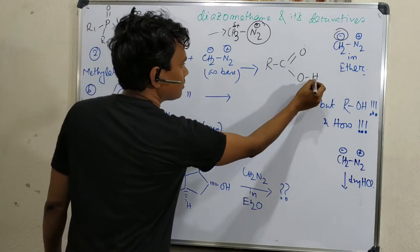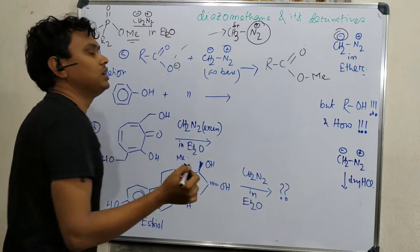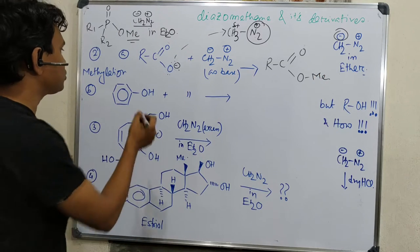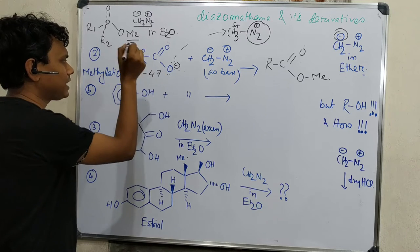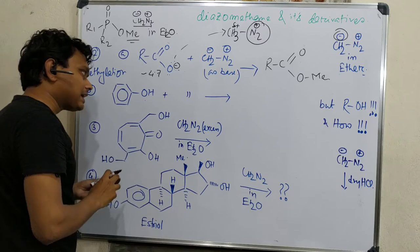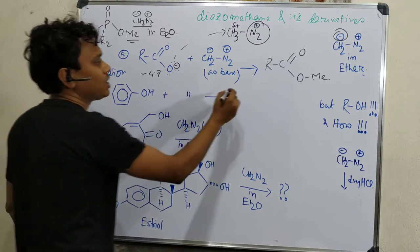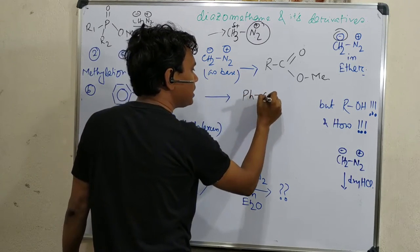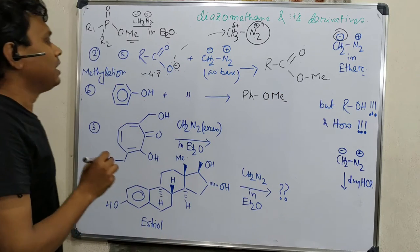We have observed that polarity of this OH bond drives the reaction of methyl ester formation. This similar factor is true for phenol because its pKa is around 9-10, carboxylic acid pKa around 4-5. Phenol can act as acid and here diazomethane acts as base similarly to produce the methyl ether of phenol.